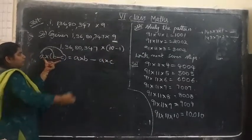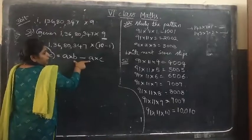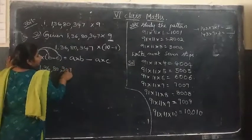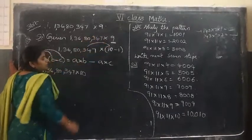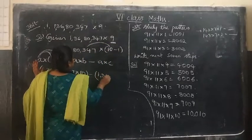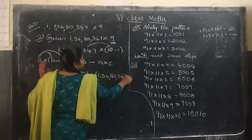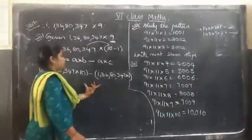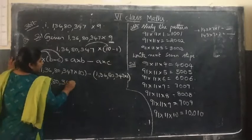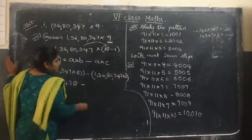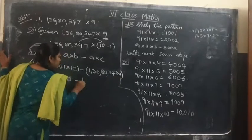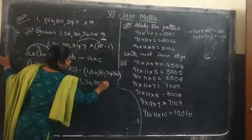So we convert it in this way: 1,36,80,347 × (10 − 1). That gives us 1,36,80,347 × 10 minus 1,36,80,347 × 1. Multiply the first number by 10 — add one more zero — giving 13,68,03,470, and then subtract 1,36,80,347.